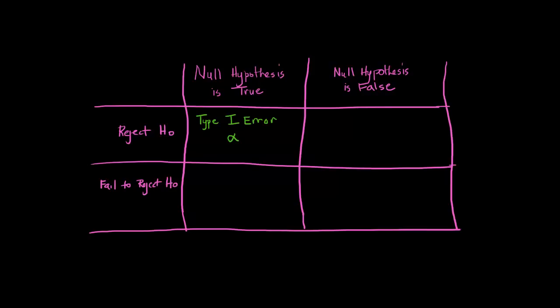So alpha is our Type 1 error and that's when the null hypothesis was true but we rejected it. Recall we set that significance level.